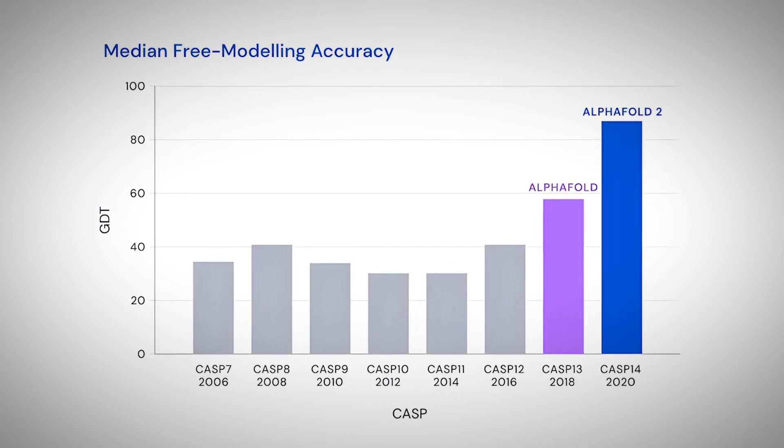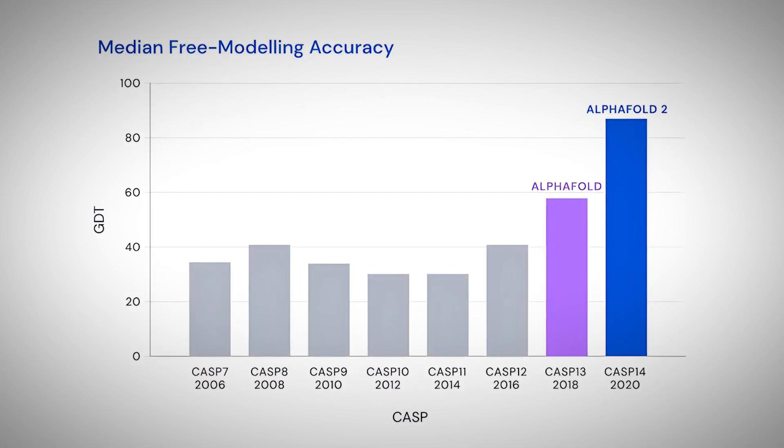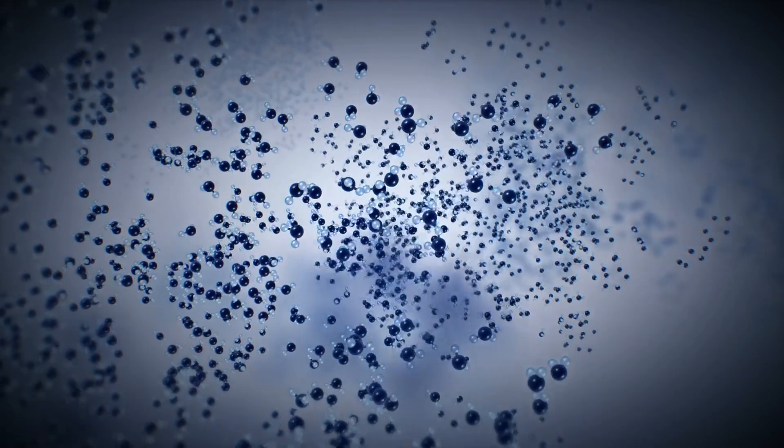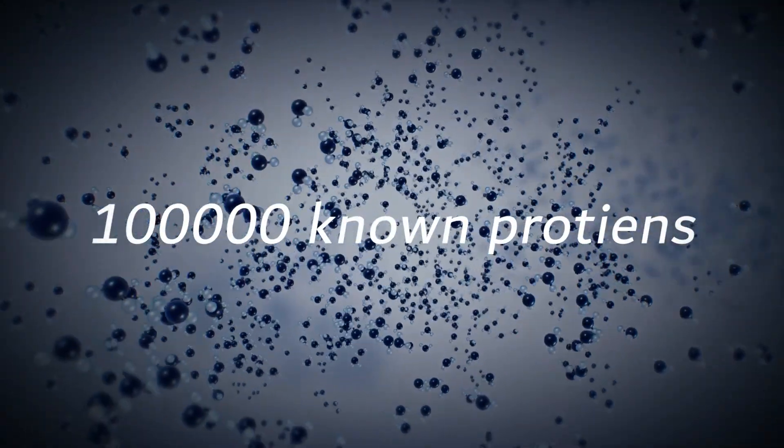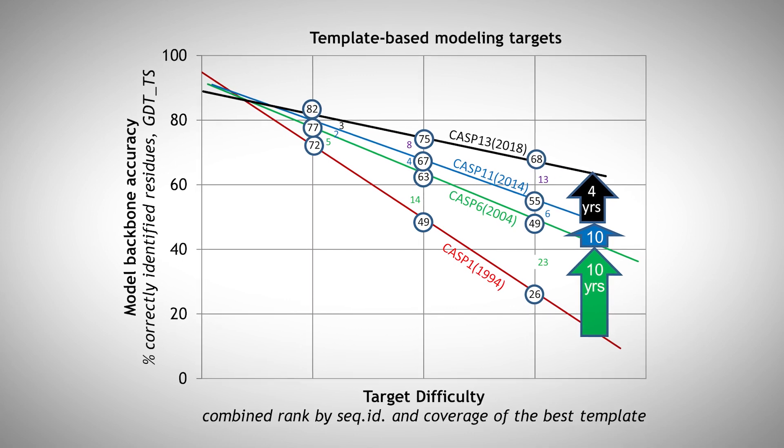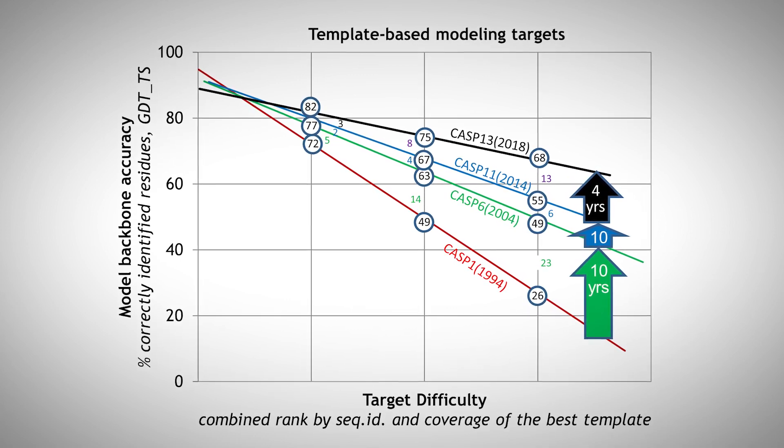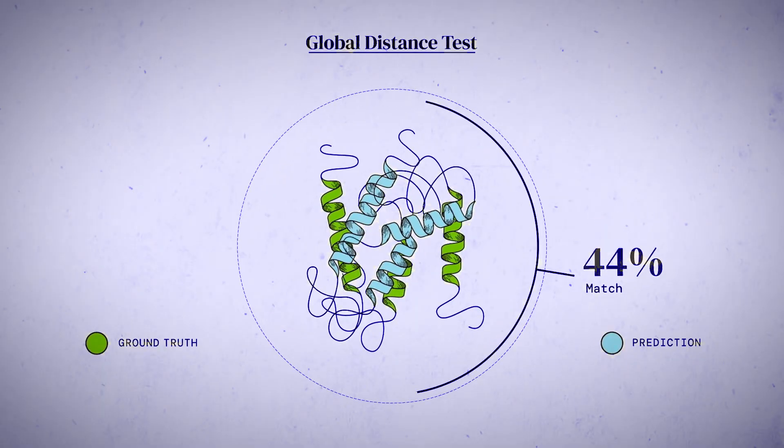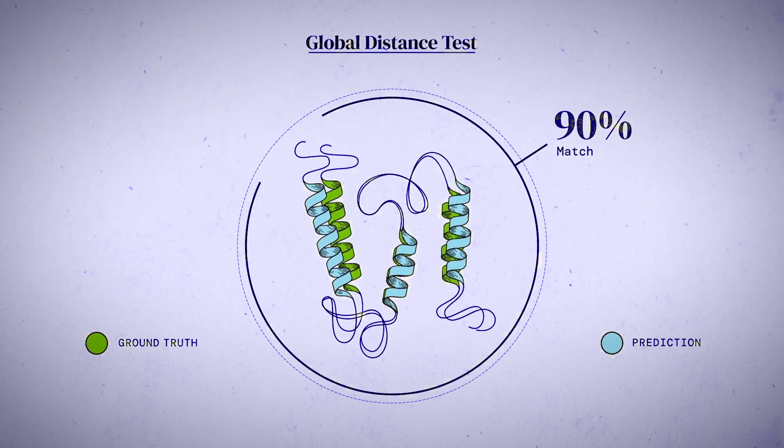The model was initially trained on the sequences and structures of around 100,000 known proteins, and its performance was well tested and validated in the CASP challenges, where it demonstrated high accuracy in predicting protein structures from amino acid sequences.